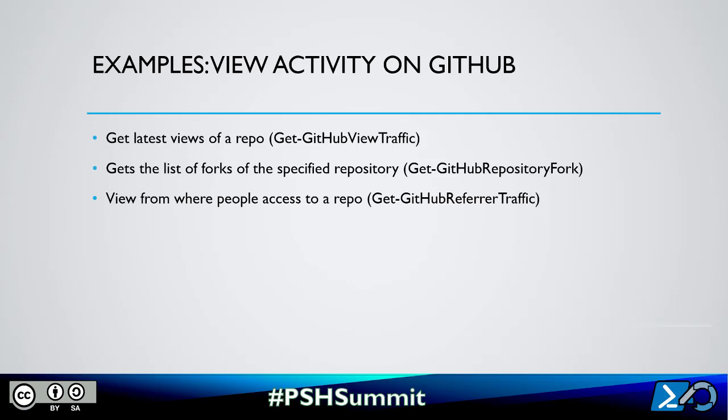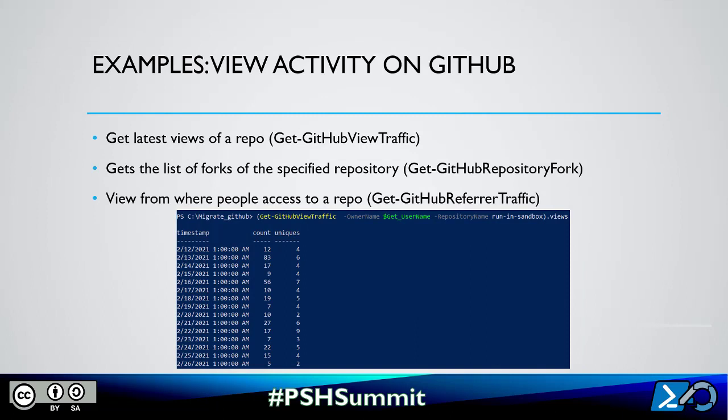Some examples about activity: to view activity on GitHub with the cmdlet, you can, for instance, get the latest views of a repository using Get-GitHubViewTraffic. This will give you some information — in this case, the last information about the last 15 days. We can also get information on a specified repository, including the name of people who visited.